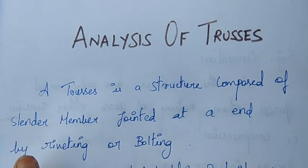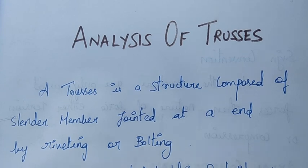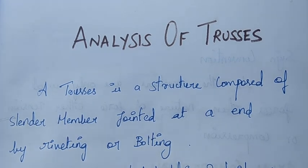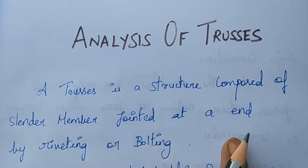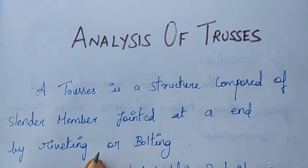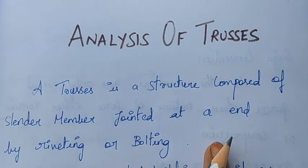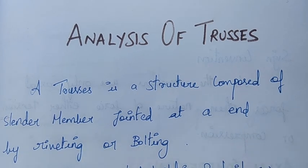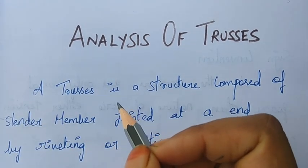We have pin-jointed structures. A truss is a structure composed of slender members jointed at their ends by riveting or pin connections.